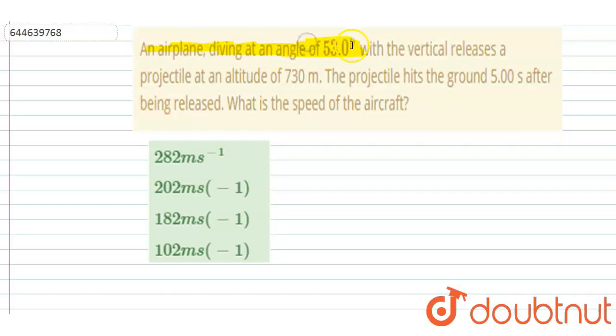an angle of 53 degrees with the vertical releases a projectile at an altitude of 730 meters. The projectile hits the ground five seconds after being released. What is the speed of the aircraft?